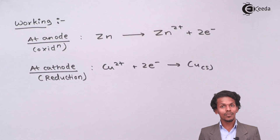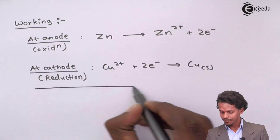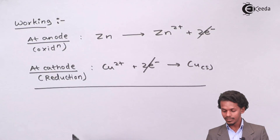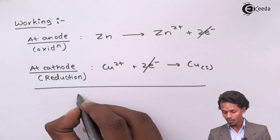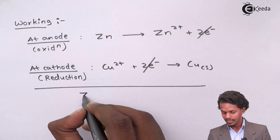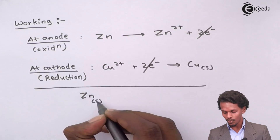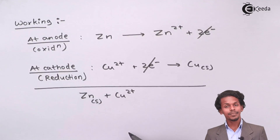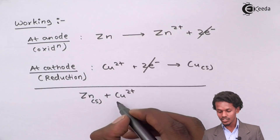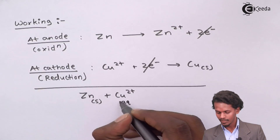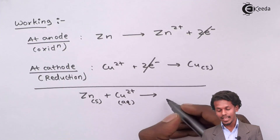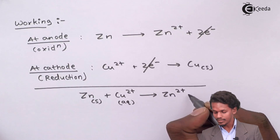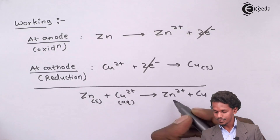The net cell reaction is obtained by combining both half-reactions. The two electrons cancel out, and the overall reaction is: Zn (solid) + Cu²⁺ (aqueous) → Zn²⁺ (aqueous) + Cu (solid).